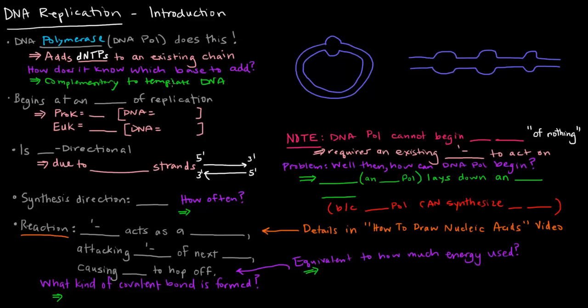So if there's a T on the existing DNA strand, then polymerase knows to add an A. And if there's a G, it knows to add a C, and so on and so forth.